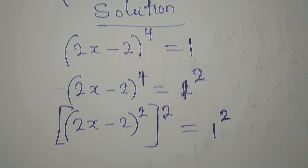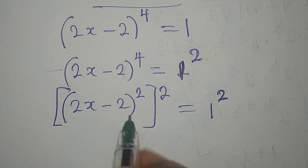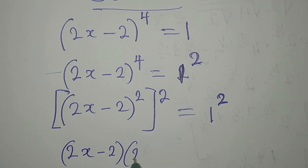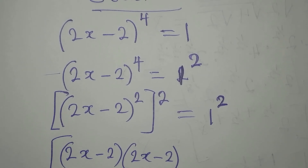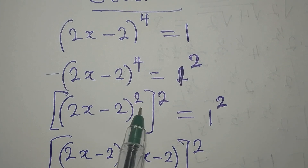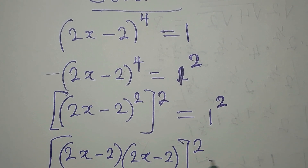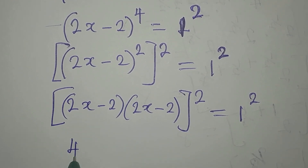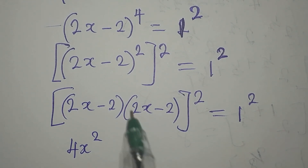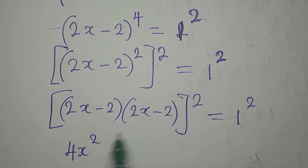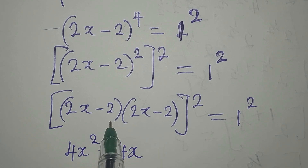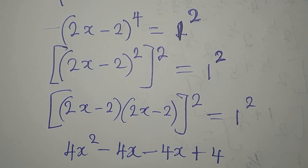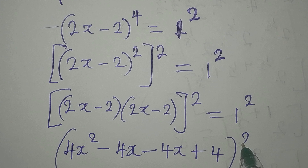Now, what we have on the inside is the same as 2x minus 2 times 2x minus 2, to the power of 2. The square on the inside has been expanded and this is equal to 1 squared. Opening the bracket: 2x times 2x is 4x squared, then 2x times minus 2 gives minus 4x, and this times this gives us the same thing.